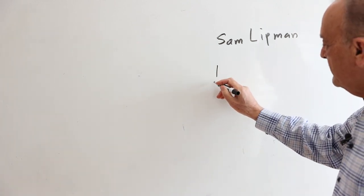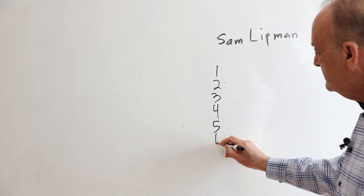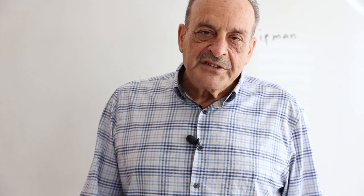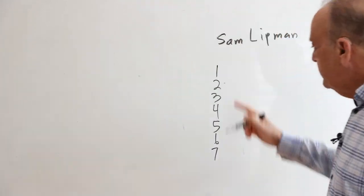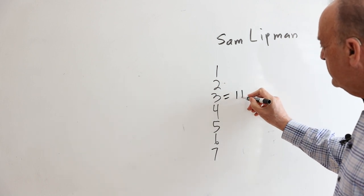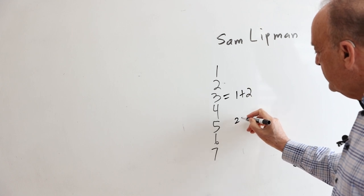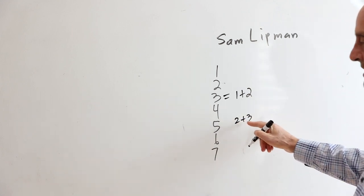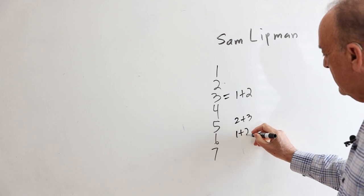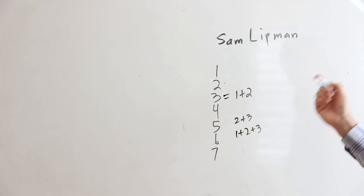The problem is basically, if you take these numbers, how can you write them as the sum of consecutive positive integers? You can't do 1, and you can't do 2, but you can do 3—3 is 1 plus 2. You can't do 4, but you can do 5, it's 2 plus 3. Notice they're consecutive. And 6 is 1 plus 2 plus 3. And 7 is 3 plus 4.